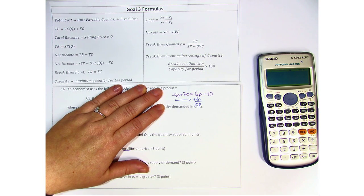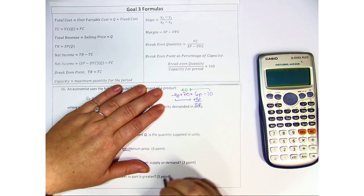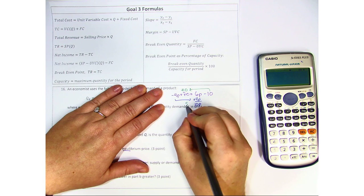Likewise, we're going to move the negative 10 over to meet the 70. And once again, that becomes positive. 10 plus 70 is 80.